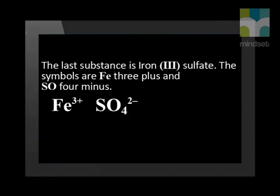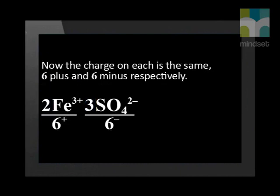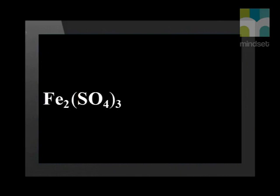The last substance is iron(III) sulphate. The symbols are Fe³⁺ and SO₄²⁻. To get an overall charge of 0, we need 2 Fe³⁺ ions and 3 SO₄²⁻ ions — now the total charge is 0, with 6 positive and 6 negative. The formula of the compound is written as Fe₂(SO₄)₃.